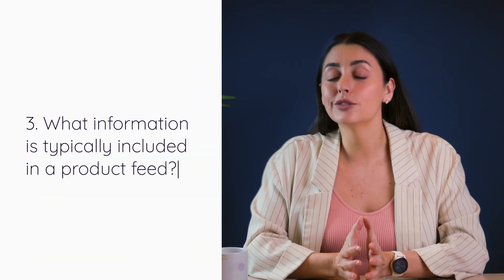What information is typically included in a product feed? Product feeds contain information relevant to the receiving end — no two product feeds are the same. A product feed for Shopify, for example, would include details that aren't relevant for a product feed meant for Amazon or a retail partner. Still, product feeds typically contain attributes such as product ID, which is the unique identifier for each product like an SKU or a GTIN, and the product title, which is the name of the product as it should appear on the platform.